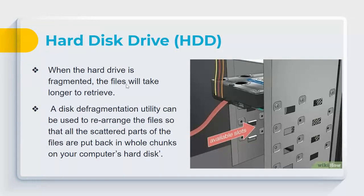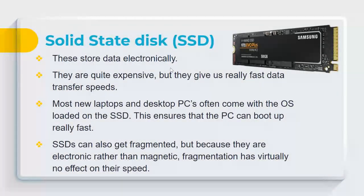When a hard drive is fragmented, files take longer to retrieve. A disk defragmentation utility rearranges scattered file parts into contiguous chunks, speeding up the drive. SSDs store data electronically and are expensive but offer very fast data transfer speeds. Most new laptops and desktops boot from an SSD for fast startup. Although SSDs can technically fragment, fragmentation has virtually no effect on SSD speed because they are electronic rather than magnetic.